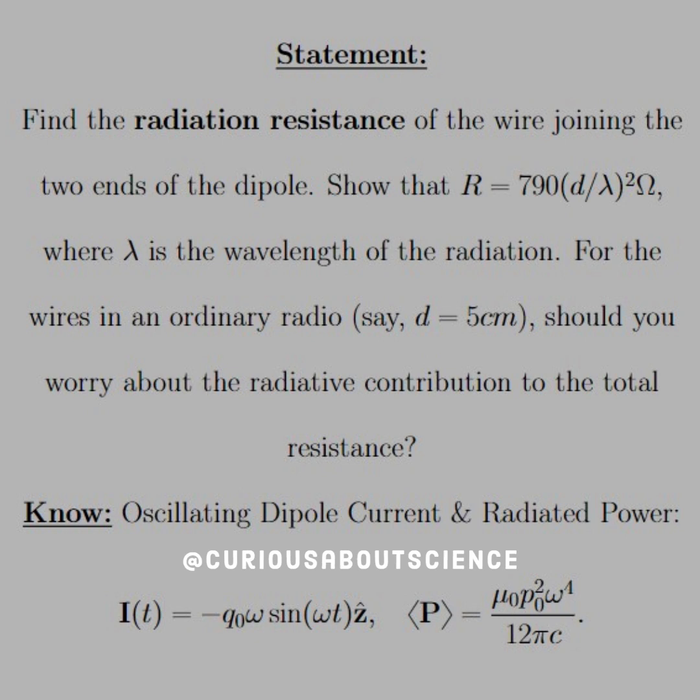Show that R equals 790 D divided by lambda squared ohms. Okay, so D would be some length of the wire and lambda the wavelength. Exactly, where lambda is the wavelength of the radiation.